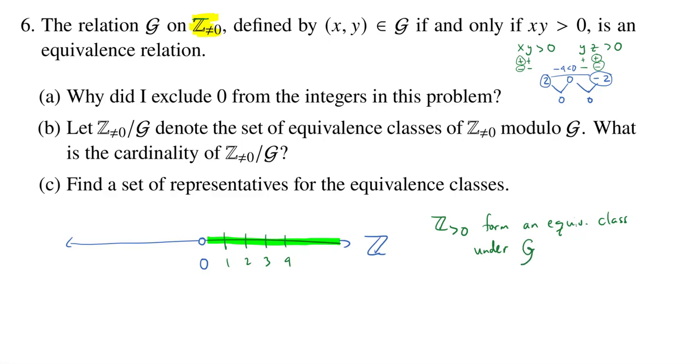On the other hand, if we move over to the left side of zero, so to the negatives, those also are going to form an equivalence class. Because when you multiply two negative numbers together, you also get something which is positive. So if I take the negative integers, these form an equivalence class under G.